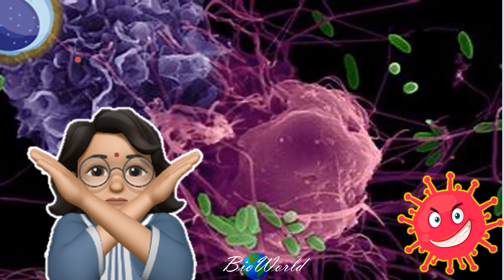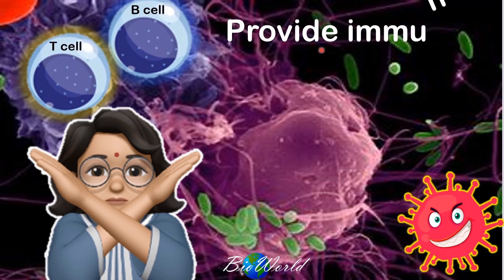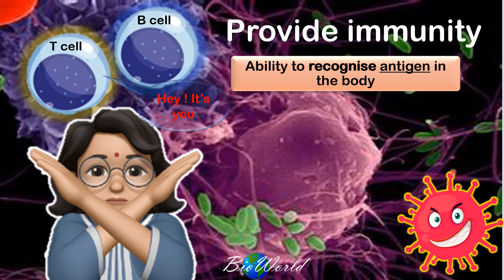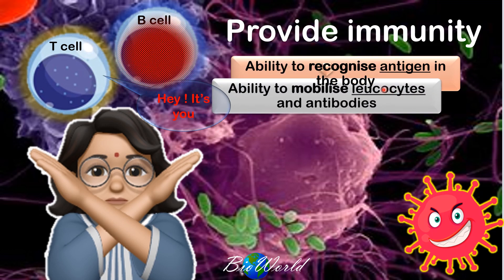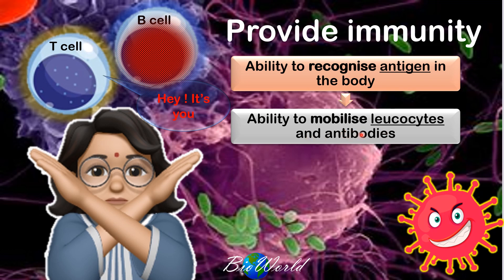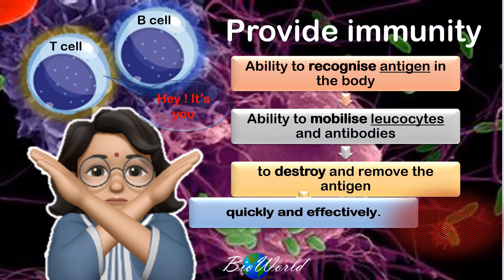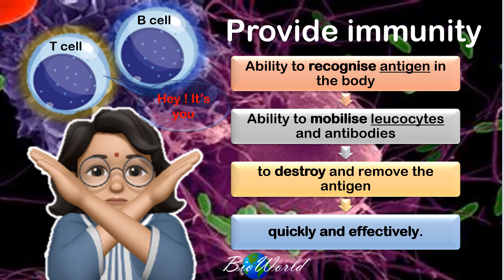Both T cells and B cells provide us with immunity. Being immune means the B cells and T cells are able to recognize pathogens or antigens in our body. Once they recognize these enemies, B cells start to produce antibodies and T cells begin to mobilize — moving towards the pathogens to destroy them. This process is done efficiently and quickly, so we do not get an infection.